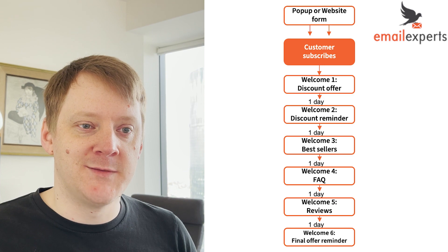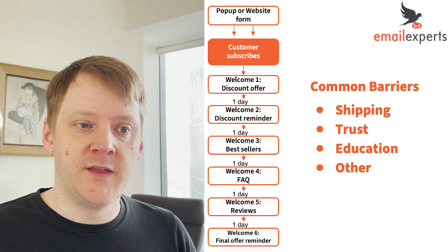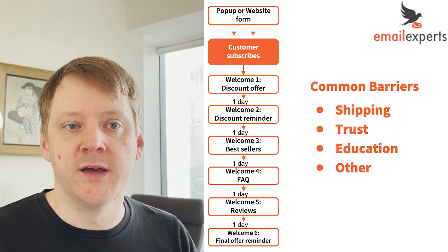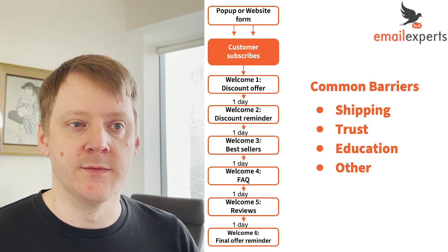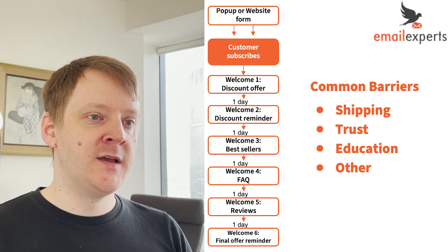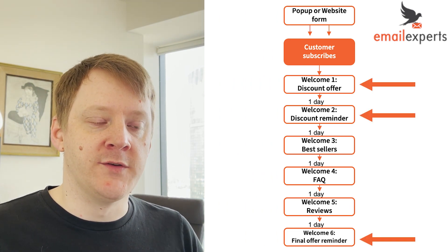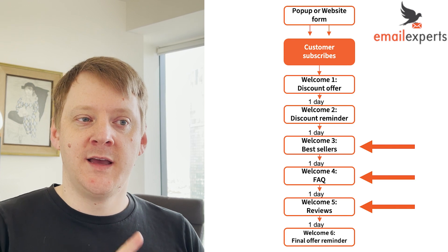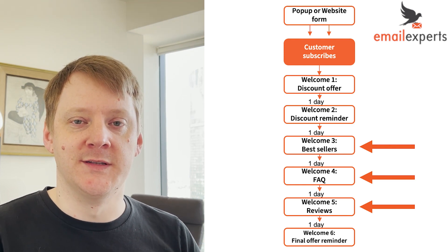To do this you need to overcome the barriers a customer has in making a purchase. There are two common barriers all e-commerce businesses face: shipping cost and trust, in addition to barriers specific to your product or brand. For example, you may need to educate your customer about your product, how to use it and its benefits, or if you have an expensive product then overcome price concerns. Each email should have a single message and call to action. The first, second and last emails should be focused on the offer. Emails three, four and five are about systematically overcoming the barriers around shipping, trust, education and other barriers — using social proof, bestsellers, reviews, and directly addressing common concerns in an FAQ-style email.